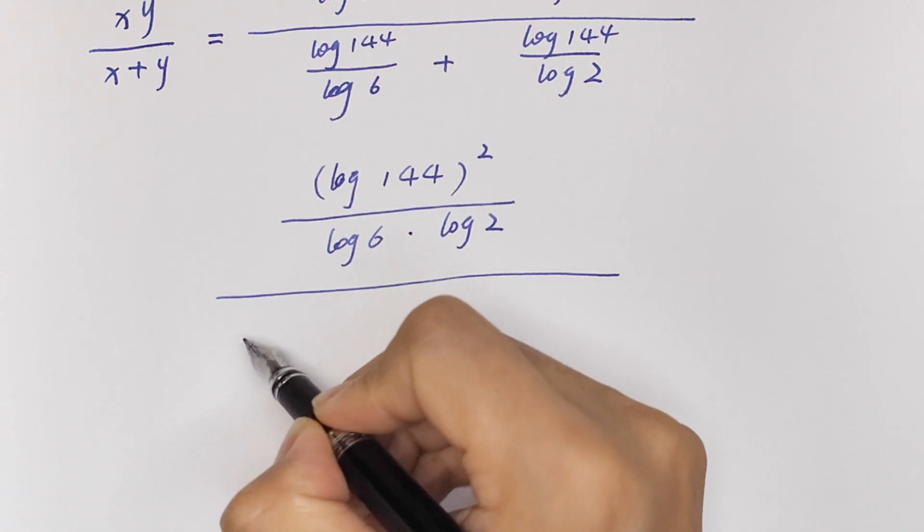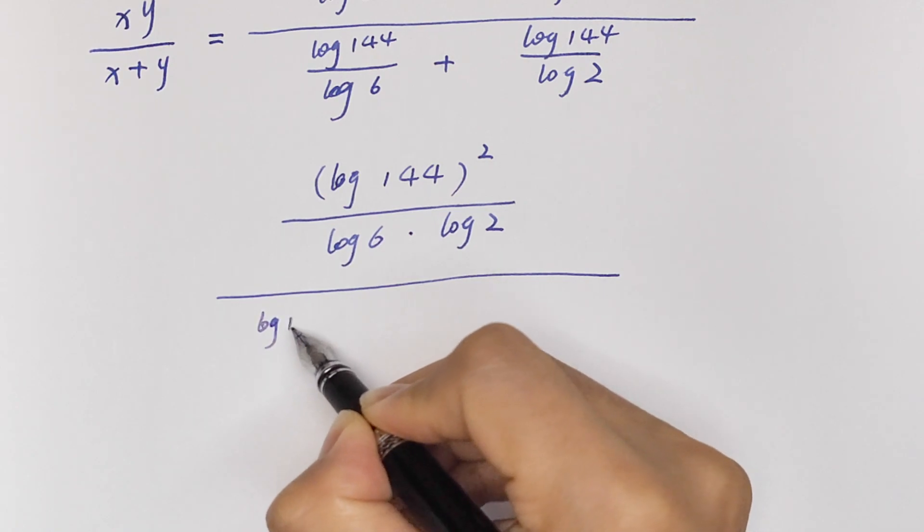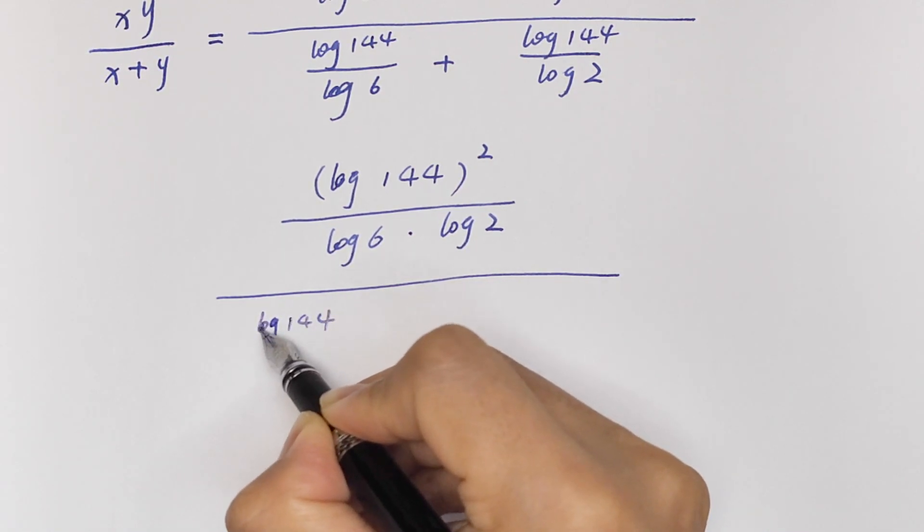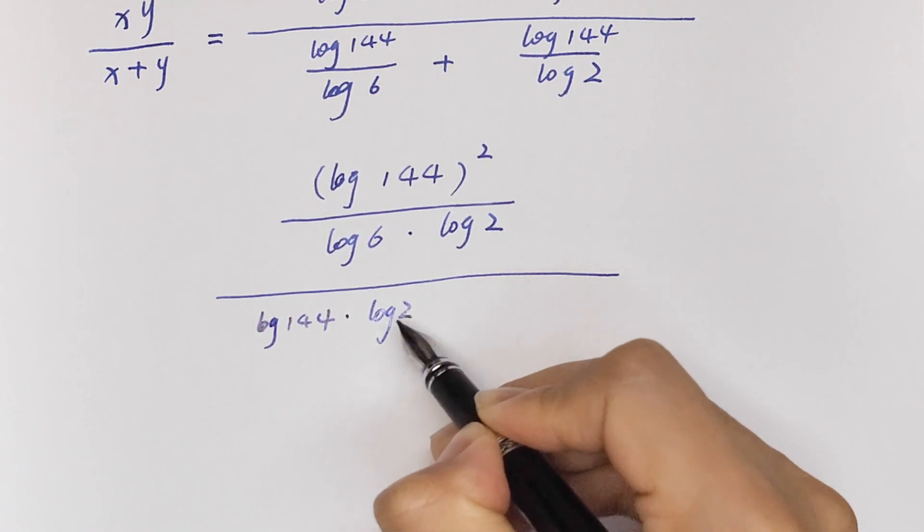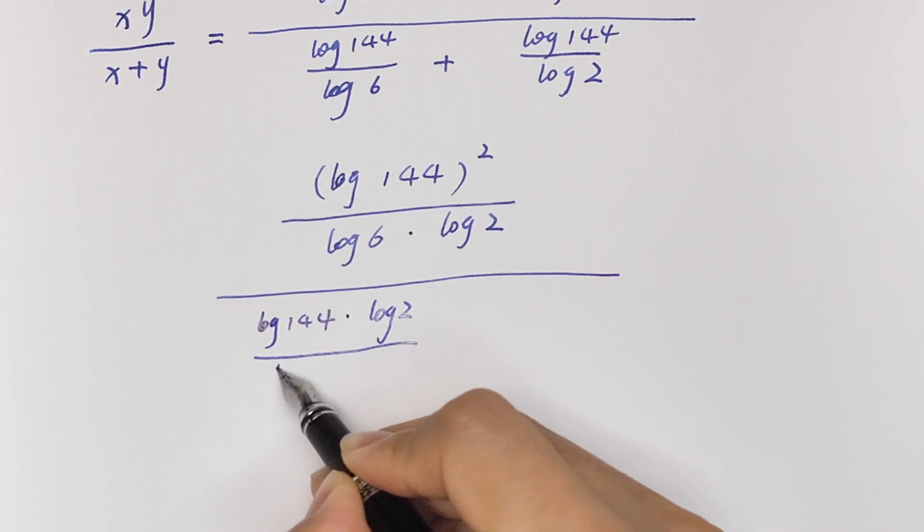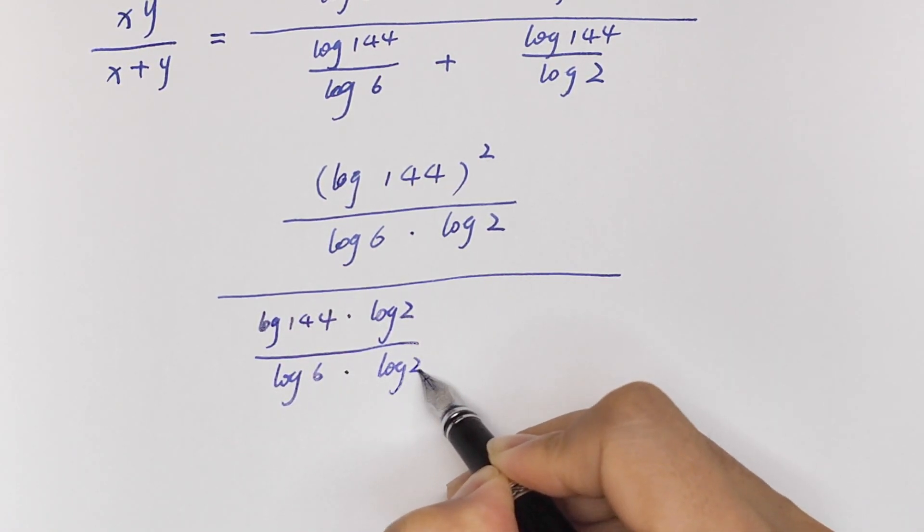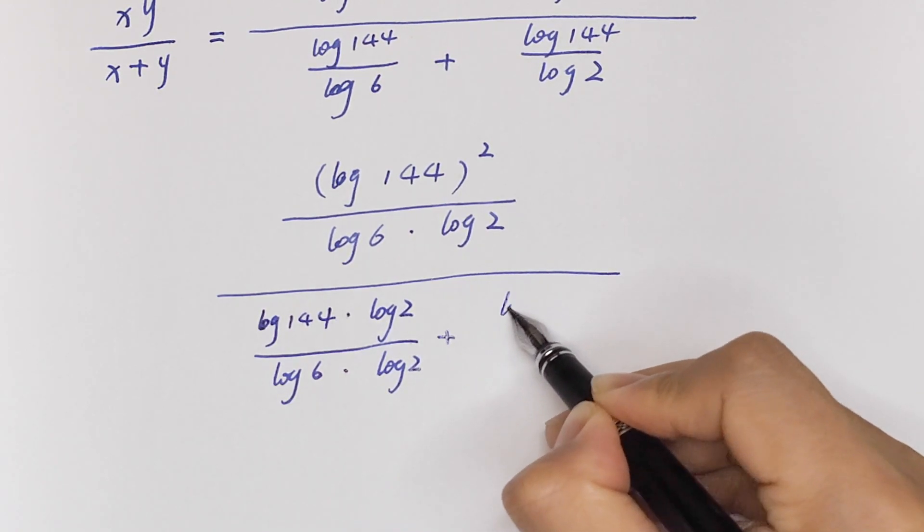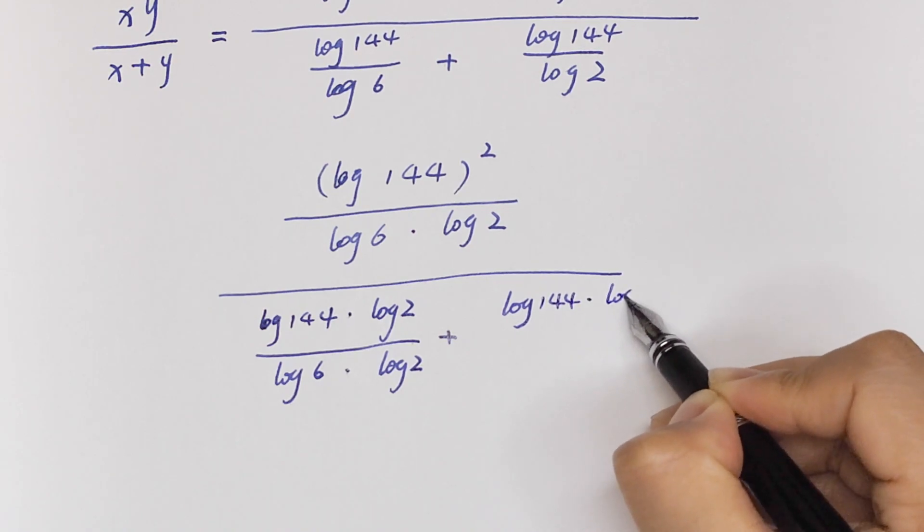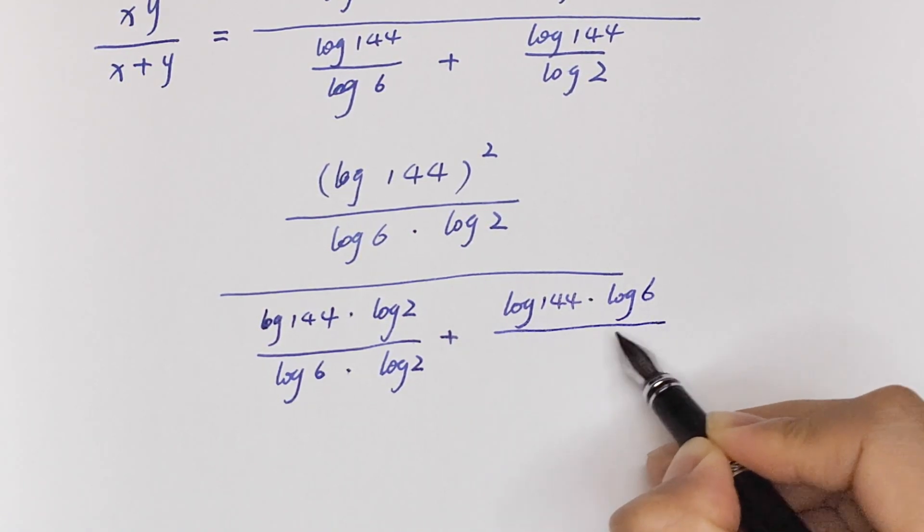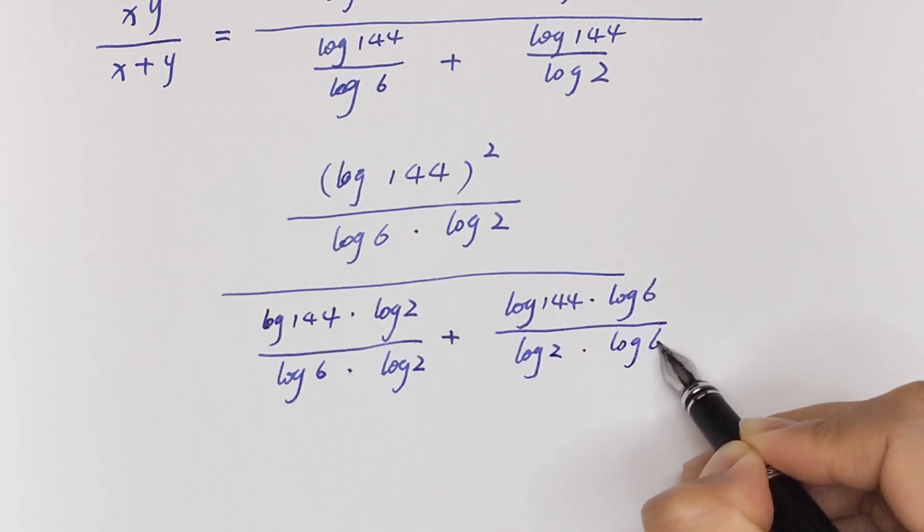So it will be equal to log 144 times log 2 over log 6 times log 2, plus log 144 times log 6 over log 2 times log 6.